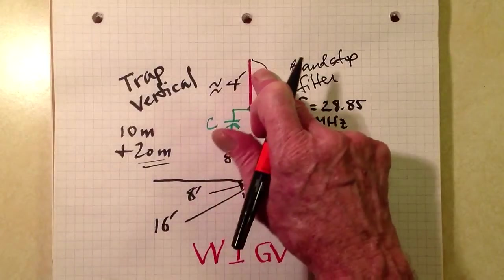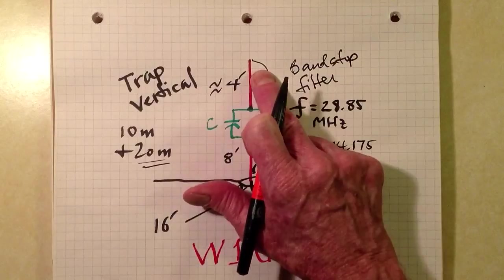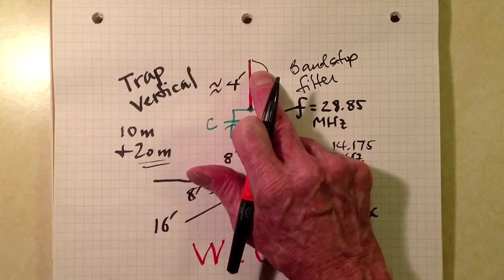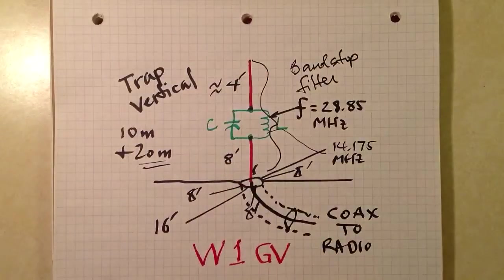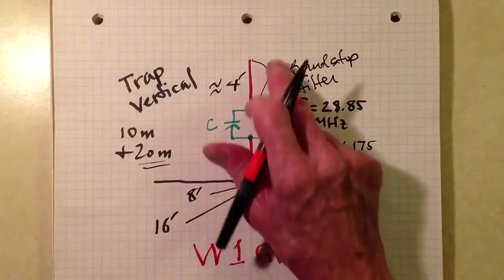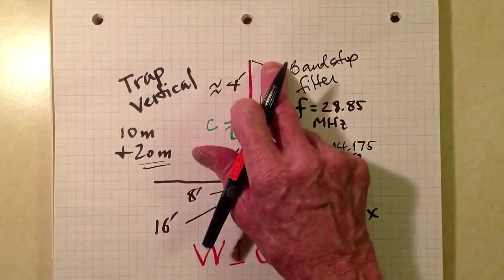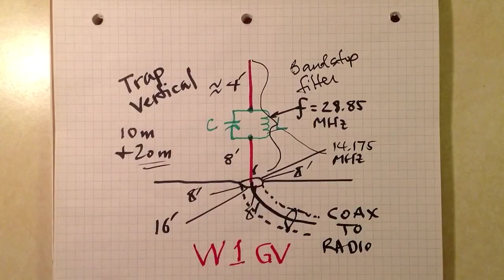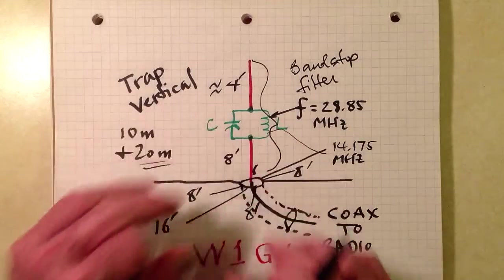If you had another trap up here, say, resonant on, oh, let's say it was resonant on 20 meters, and then you extended the vertical up further so that the whole thing would resonate on 40 meters, but at 20 meters it would stop it at this height, then you'd have a three band trap vertical. So that is the concept.